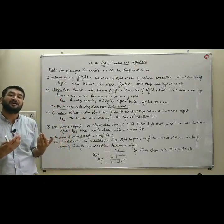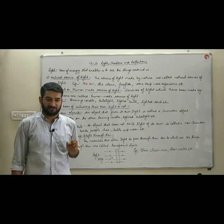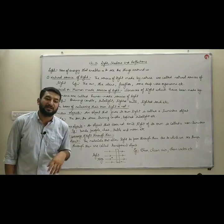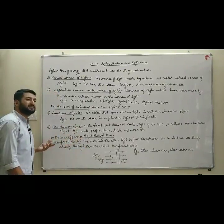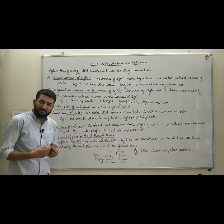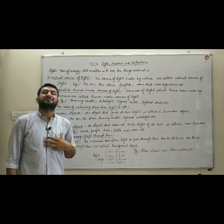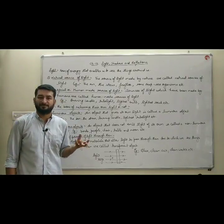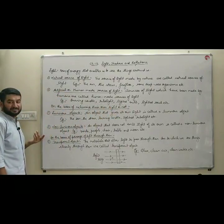The sources of light which are made by human beings for their well-being and use are known as human-made or artificial sources of light. For example, the tube light placed at the walls of your houses, the burning candle. These are artificial sources made by human beings. The lighted electric bulb was discovered by Thomson and Alvarez.